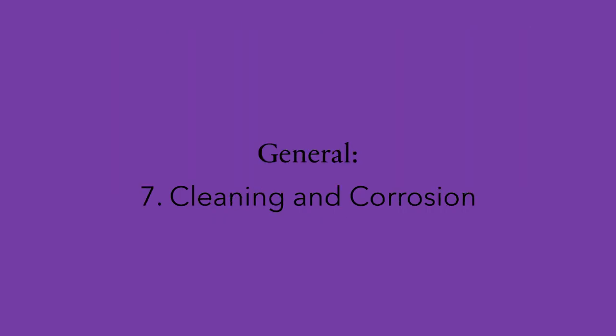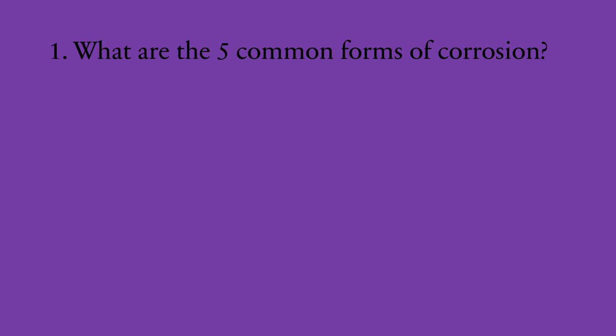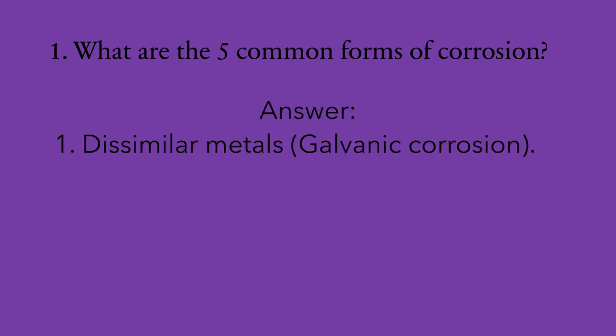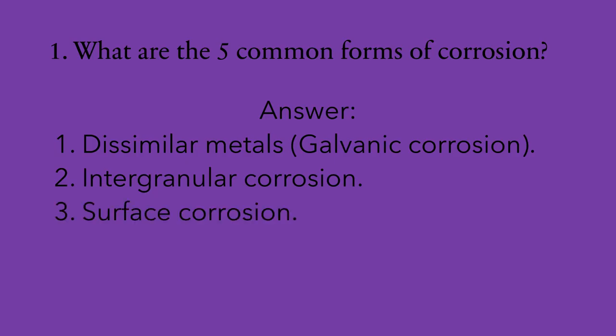Section number seven: cleaning and corrosion. Question number one: what are the five common forms of corrosion? They are: one, dissimilar metals, also known as galvanic corrosion; two, intergranular corrosion; three, surface corrosion; four, stress corrosion; and five, fretting. Number two: name at least three factors that influence corrosion. There are actually several: temperature, the presence of natural light, the type of metal, the condition of the protective coating, moisture, and contaminants.